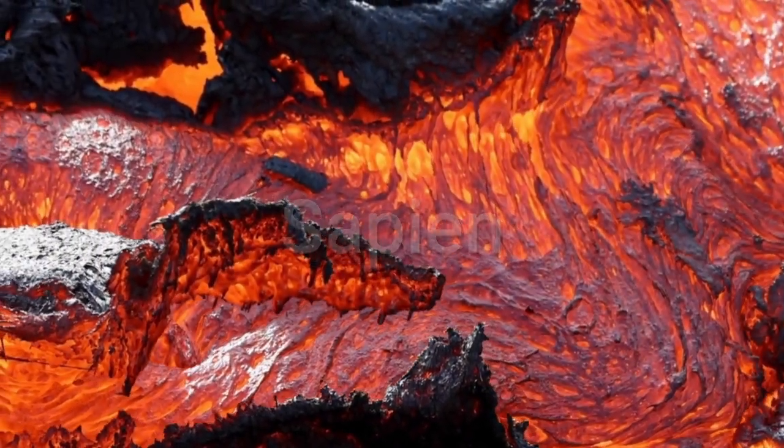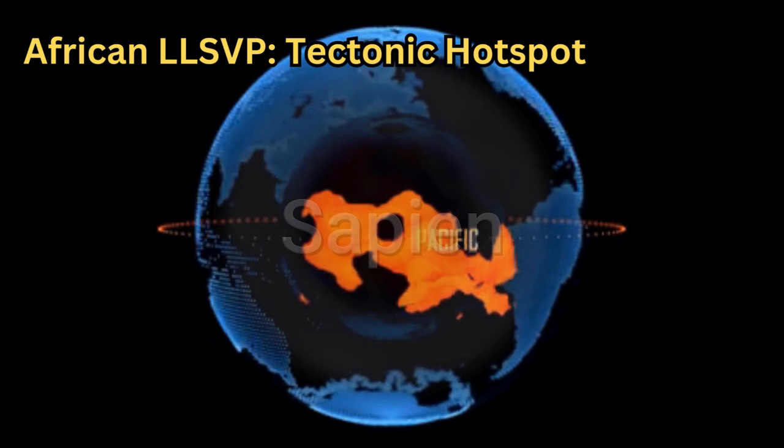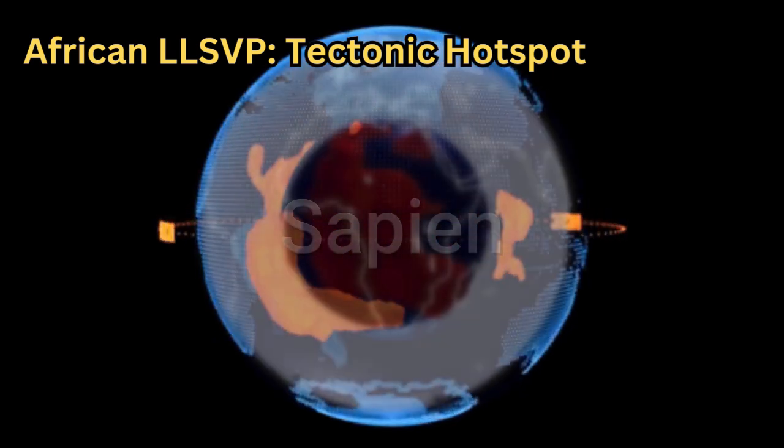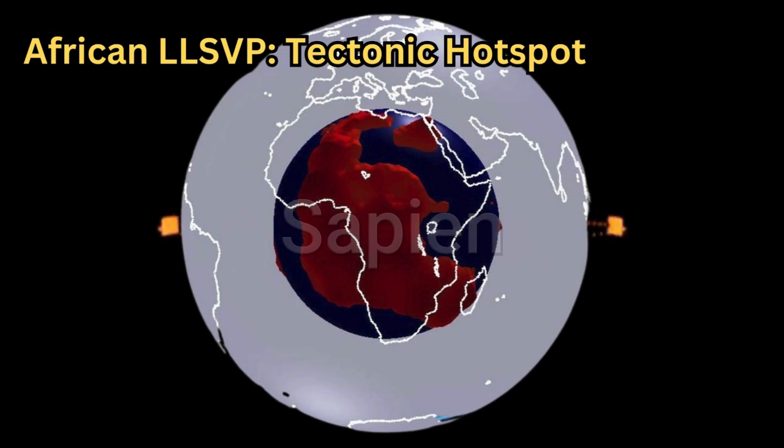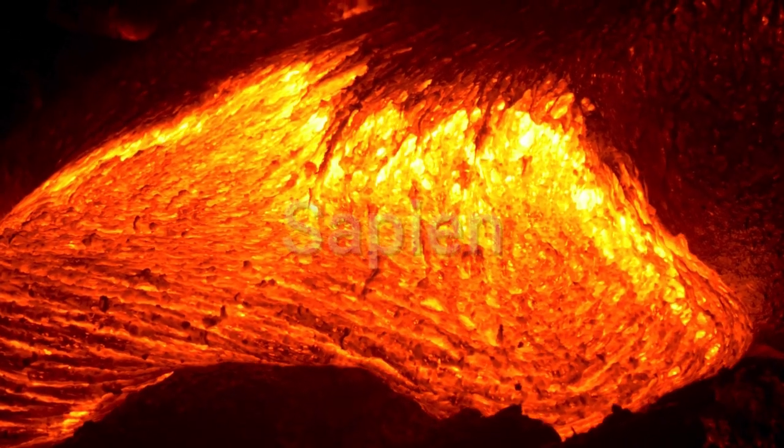It was a massive plume of magma, rising from the depths of the African LLSVP, a continent-sized blob of hot material sitting at the boundary between Earth's core and mantle.